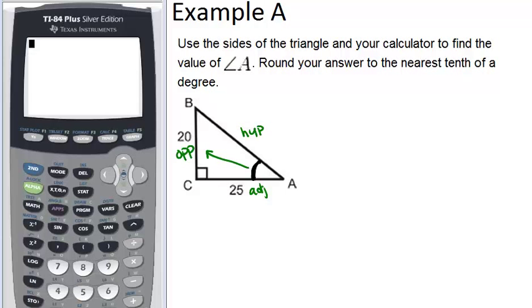And notice in this problem, we're dealing with adjacent and opposite. The hypotenuse is not labeled with anything. So adjacent and opposite is going to be tangent. If you remember SOHCAHTOA, that will help to remind you about which ratio is which. So opposite and adjacent is tangent.